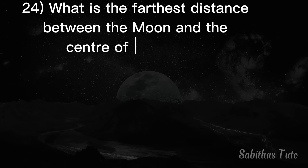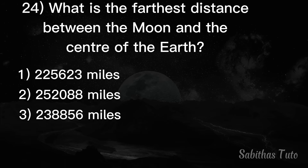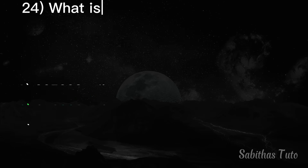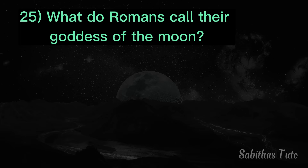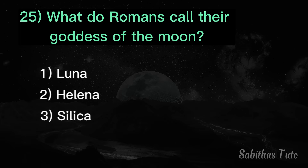Twenty-fourth question. What is the farthest distance between the moon and the center of the earth? The answer is 252,088 miles.